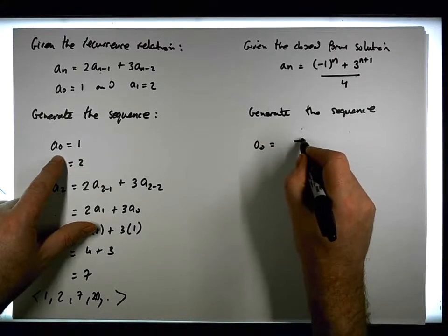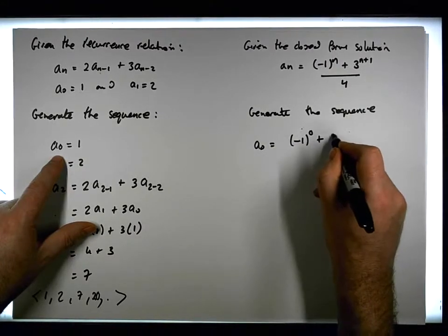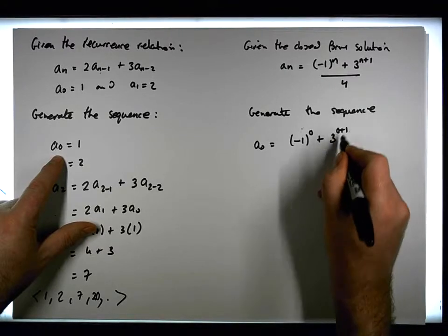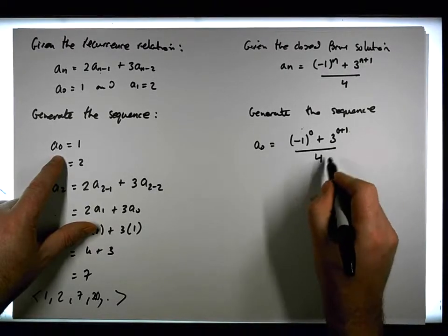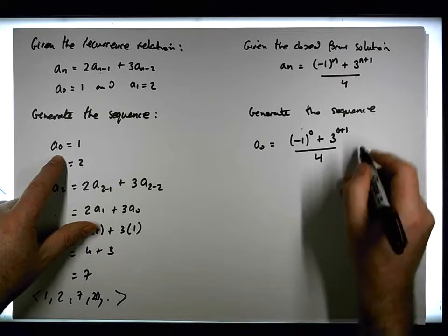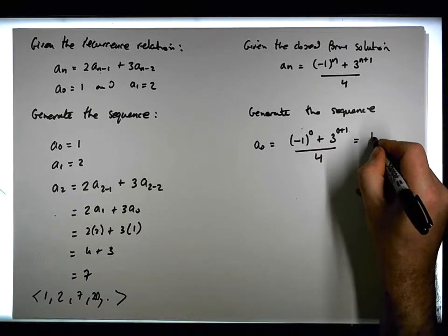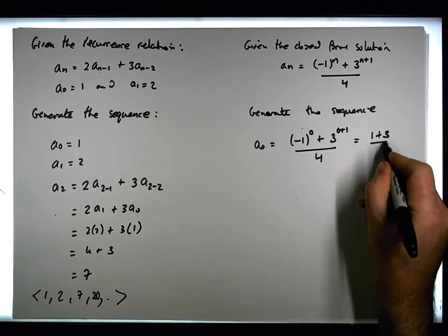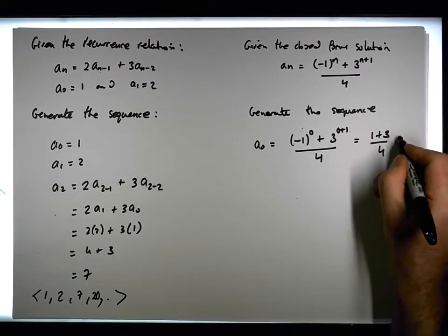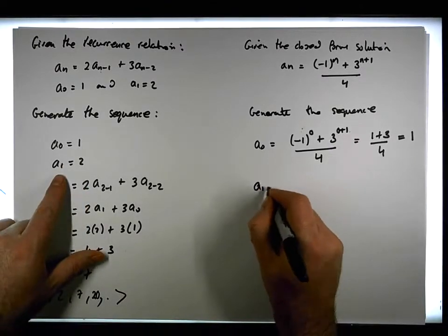Let's calculate a₀ from the closed form. a₀ is (-1)⁰ plus (3^(0+1)) over 4. (-1)⁰ is just 1 and 3¹ is 3, so that's 1 plus 3 over 4, which gives us 4 over 4. So a₀ is equal to 1, which is what we require.